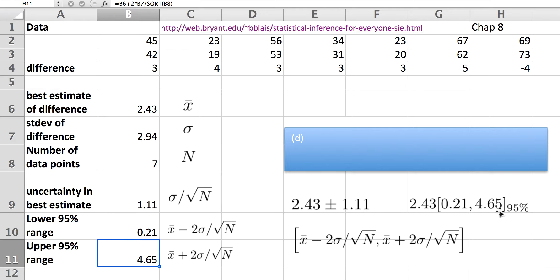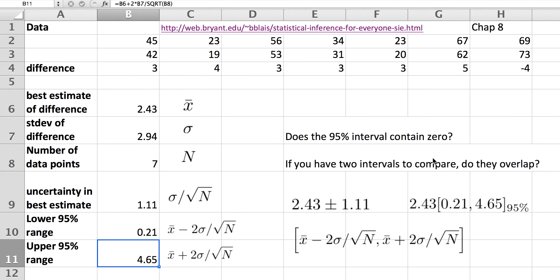We have our best estimate and we have our uncertainty. We can ask certain questions about that. For example, does this interval contain zero? Does it straddle zero? Essentially, is one of these values negative and one of them positive? In this case, the answer is no. Zero is not in there. So we can be confident that this best estimate is actually significant.